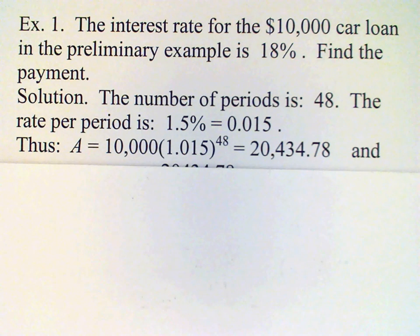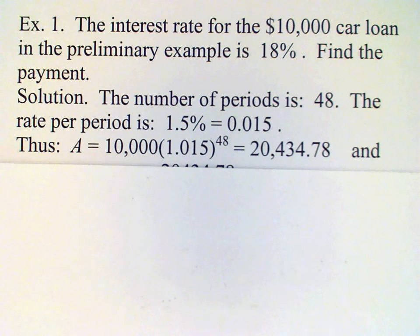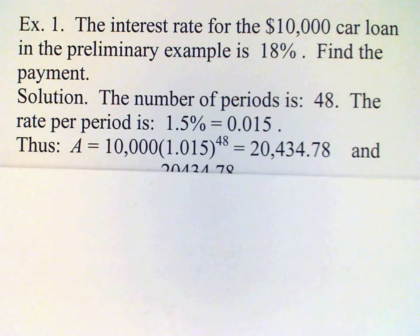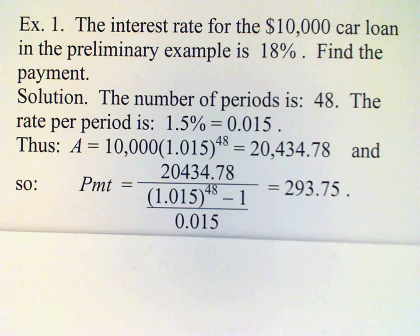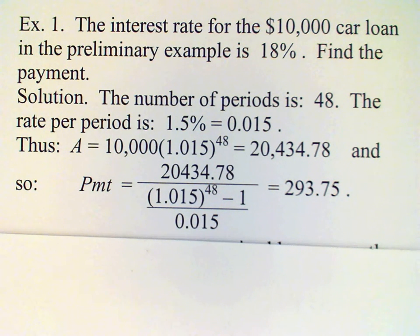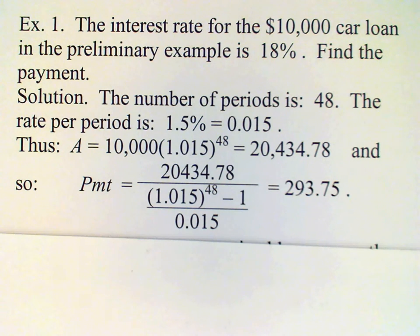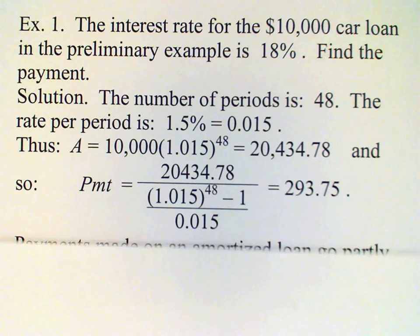Now we can compute the compound amount — this is the amount that the bank hopes to recover in four years. This allows us to calculate the payment, which works out to two hundred ninety-three dollars and seventy-five cents.